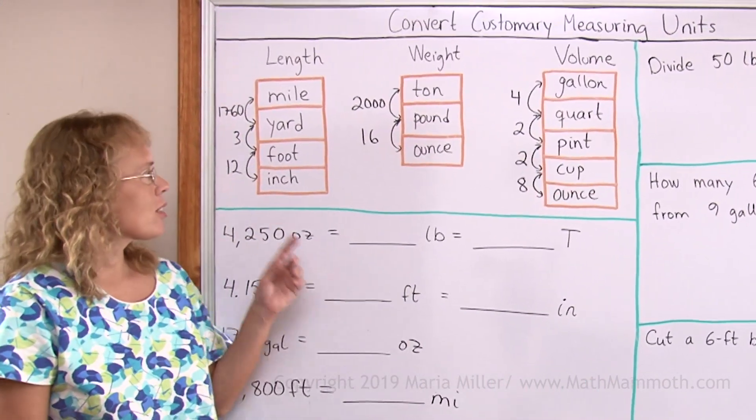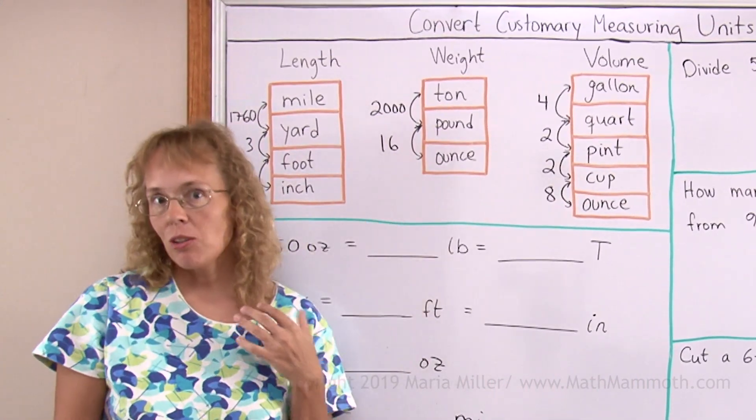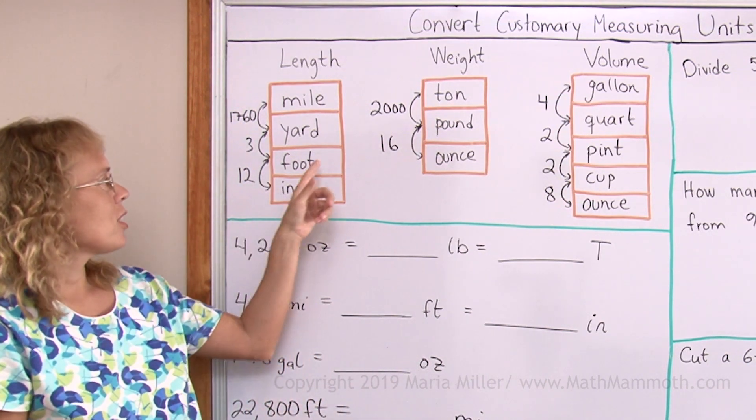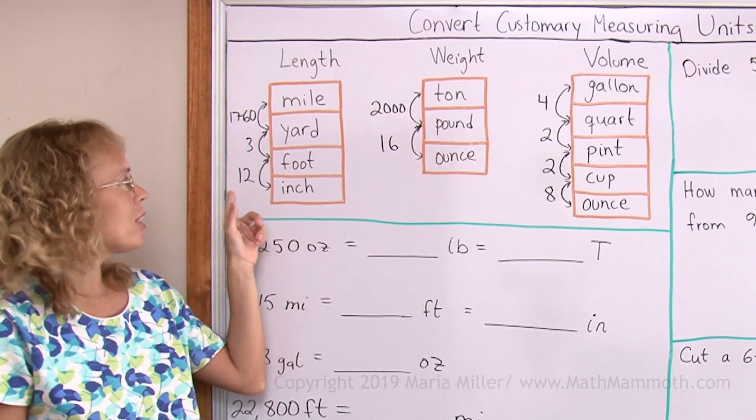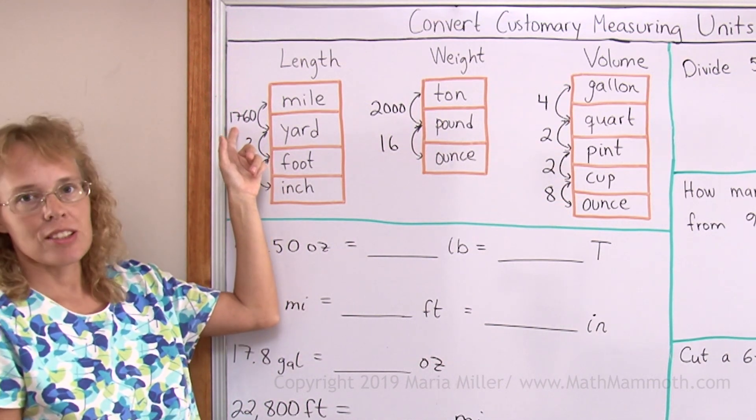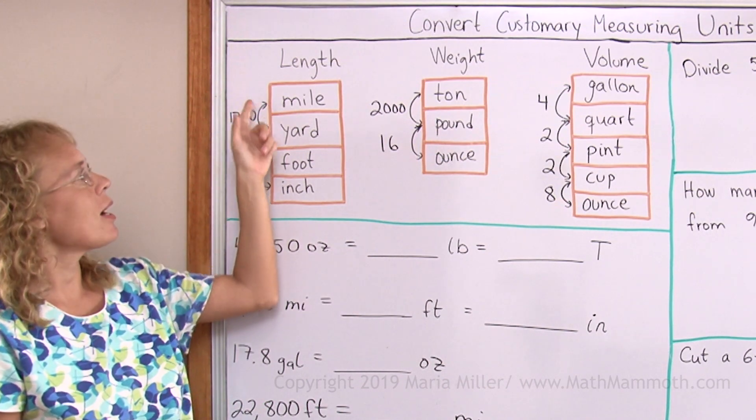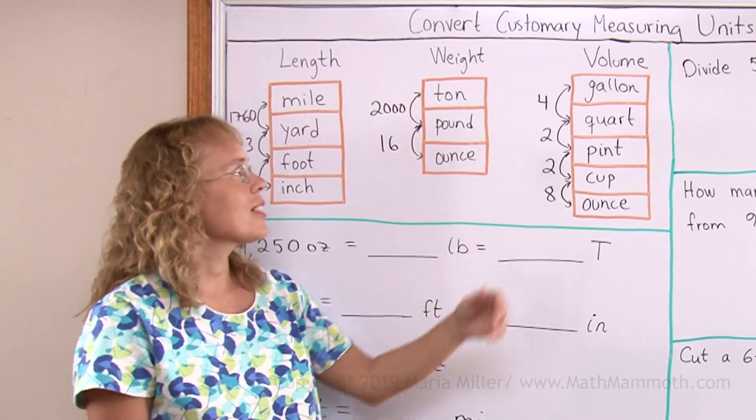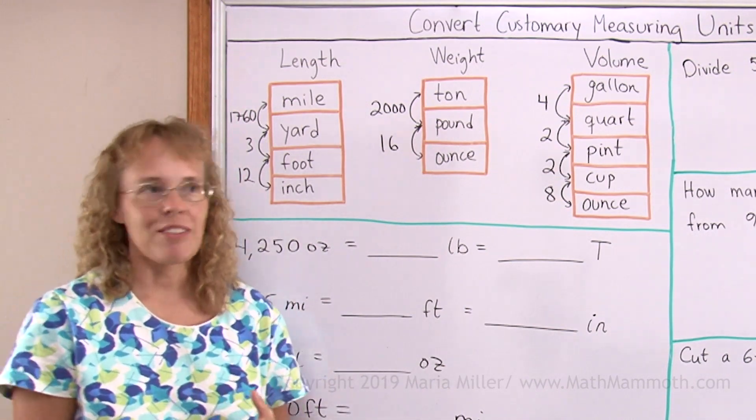I wrote the major customary measuring units here with the conversion factors. As a reminder, for example, inch and foot. This 12 means that there's 12 inches in a foot, and then 3 feet would make a yard, and then 1760 yards would make a mile. And you're already familiar with these, so I'm not going to go into detail with them now.